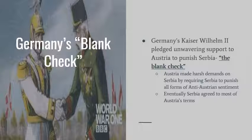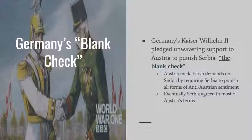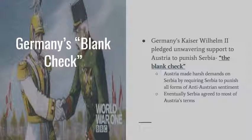The second major event contributing to the start of World War I is Germany's blank check to Austria. Since Germany and Austria-Hungary were allies, after the assassination, Kaiser Wilhelm II pledged unwavering support to Austria to punish Serbia. Germany offered Austria a blank check — essentially unlimited funds — to exact revenge on Serbia. Austria then made harsh demands on Serbia, requiring it to punish all forms of anti-Austrian sentiment. Eventually, Serbia agreed to most of Austria's terms.